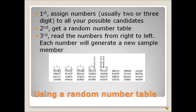So if I had a sample of 100 schools and I knew that I needed to select 15 of them for a survey, then I would assign each of my schools a two digit code from 00 through 99. Second, I'm going to get my random number table. And third, I'm going to read the numbers from left to right. Each number is going to generate a new sample number.